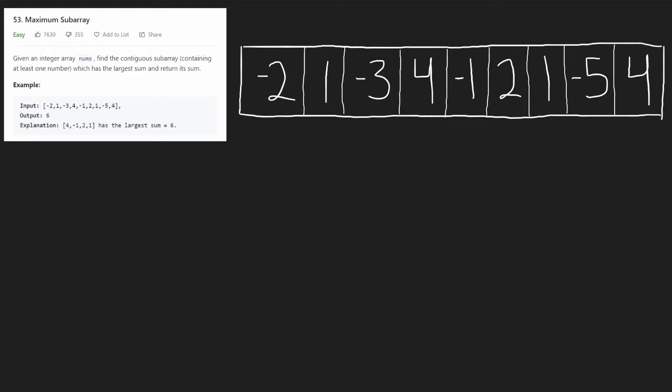Let's solve LeetCode 53, maximum subarray. We're given an integer array of nums and we want to find the contiguous subarray containing at least one number which has the largest sum, then return only the sum. This array has positive numbers and negative numbers, so that's what we have to keep in mind. In this case the largest sum is six, and it's just this middle portion of the array.